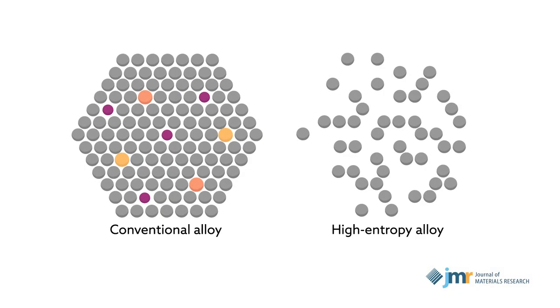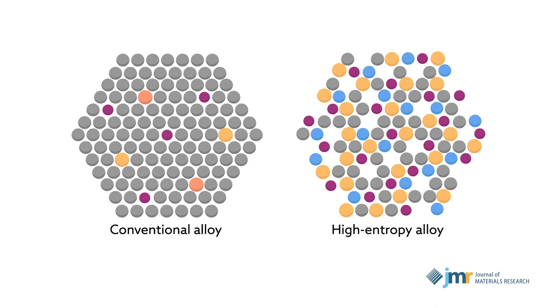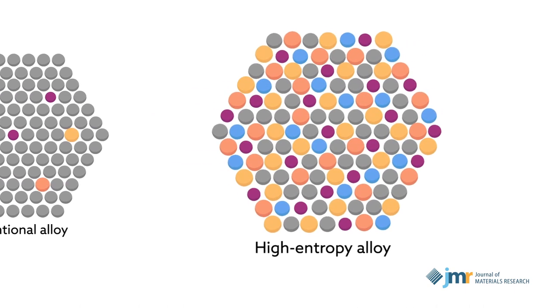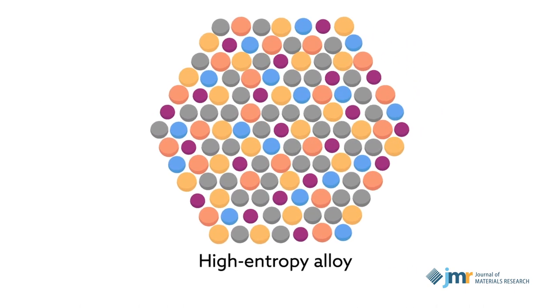That limitation has fueled research into high-entropy alloys. Rather than basing alloys on a single element, high-entropy alloys use concentrated blends of five or more principal elements to form an alloy base.